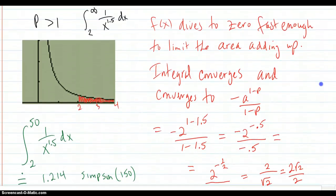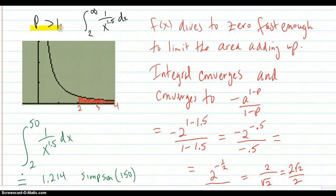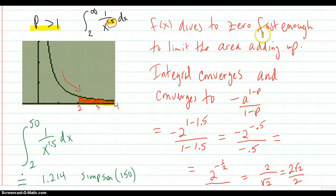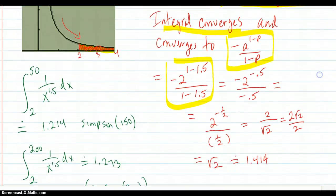Here's the case of p greater than 1, such as 1.5. Looking at the picture, this area is crammed down against the x-axis because the curve is diving to 0 faster due to the exponent in the denominator. So f of x dives to 0 fast enough to limit the area from adding up too much, and the integral converges. In this example with a equal to 2 and p equal to 1.5, we put the numbers into the formula and find that it converges to the square root of 2.